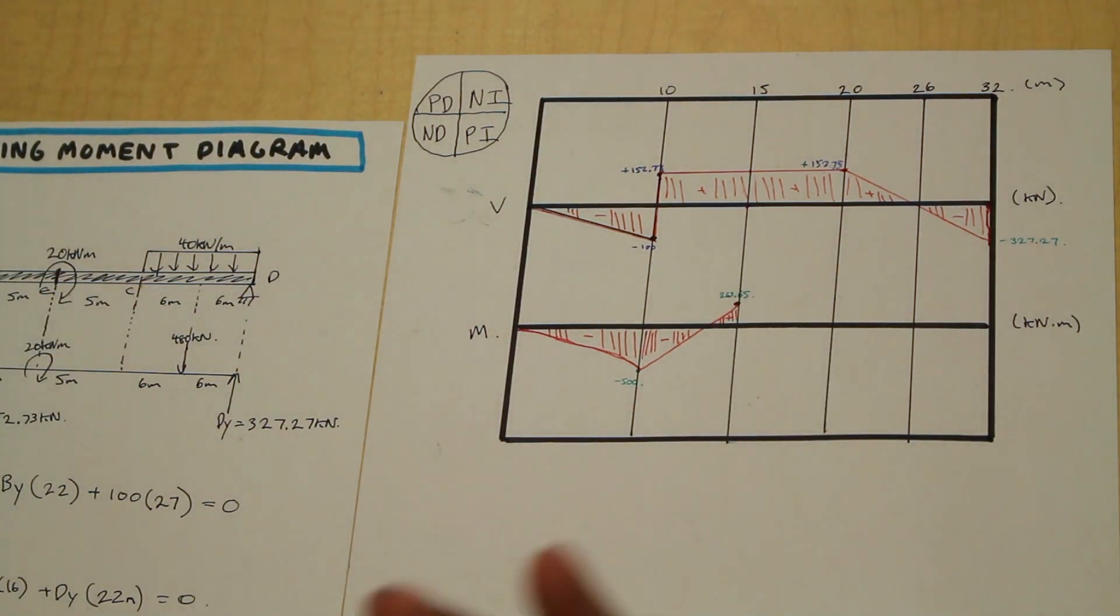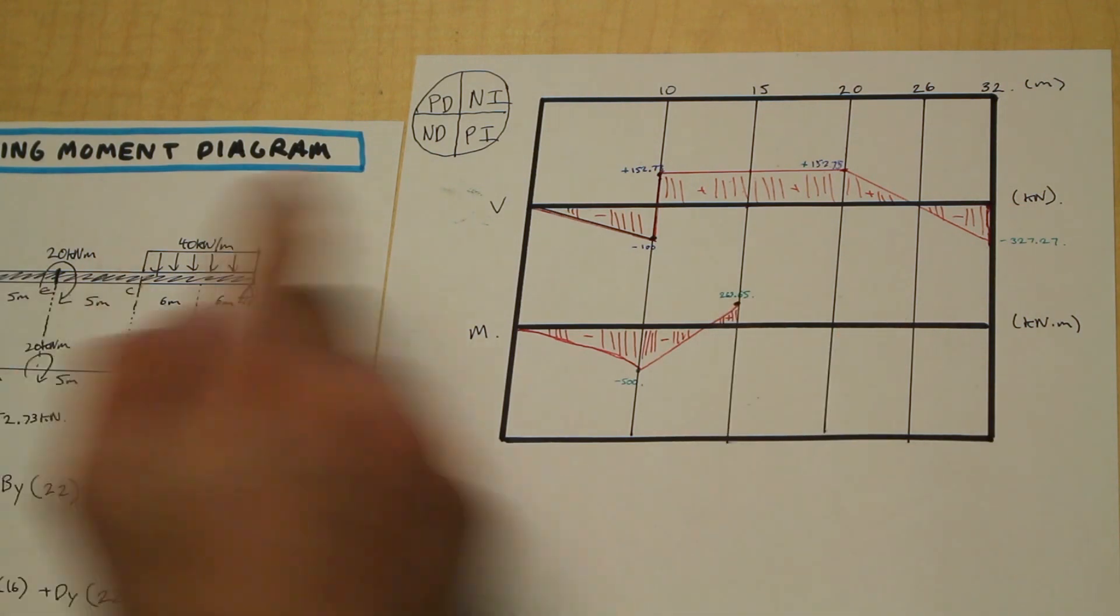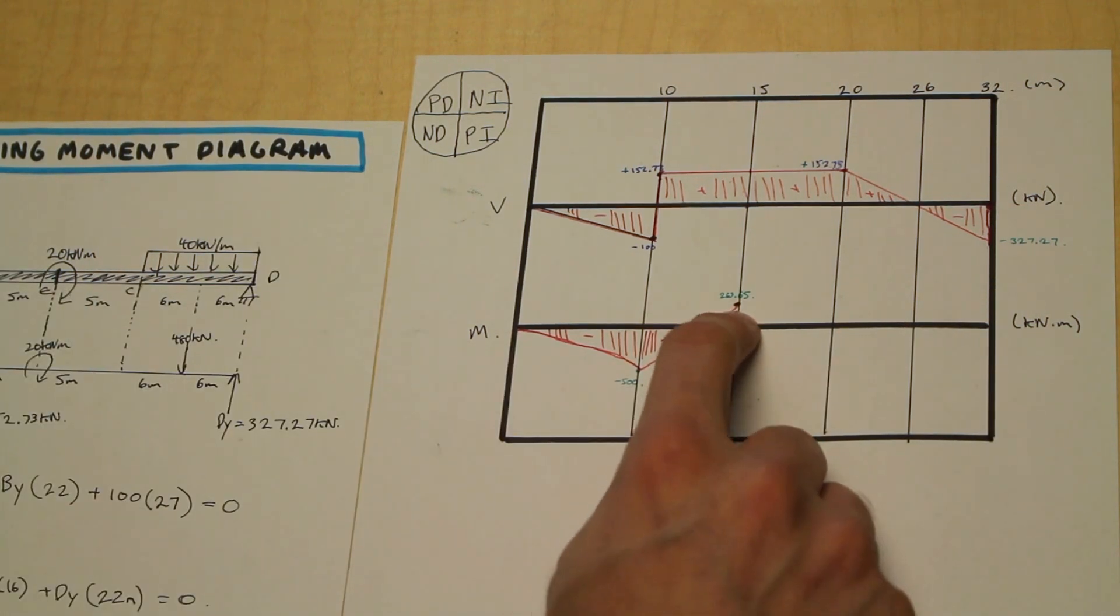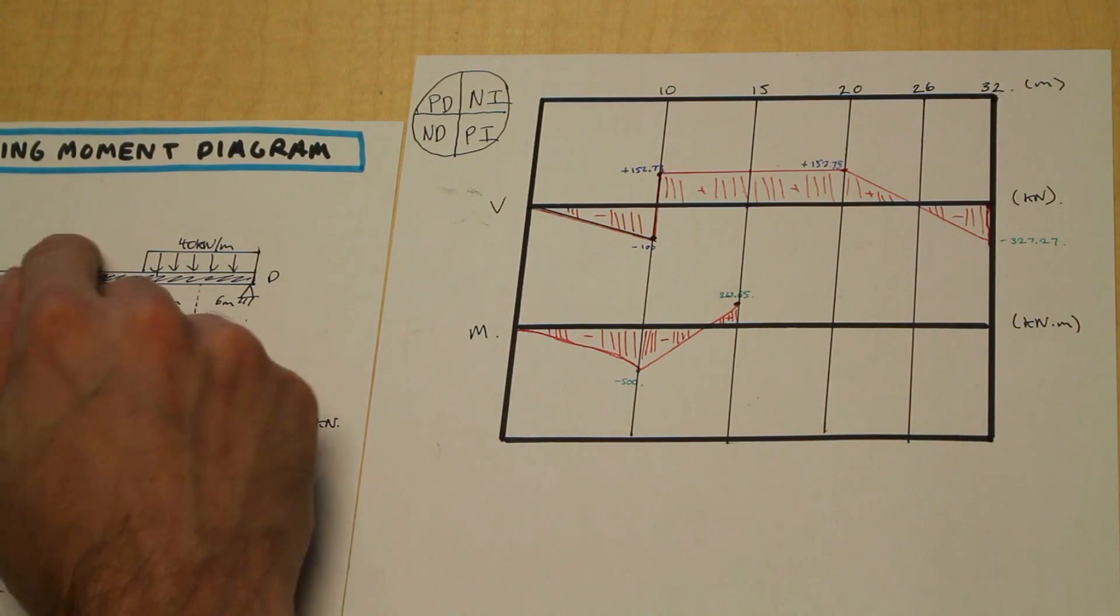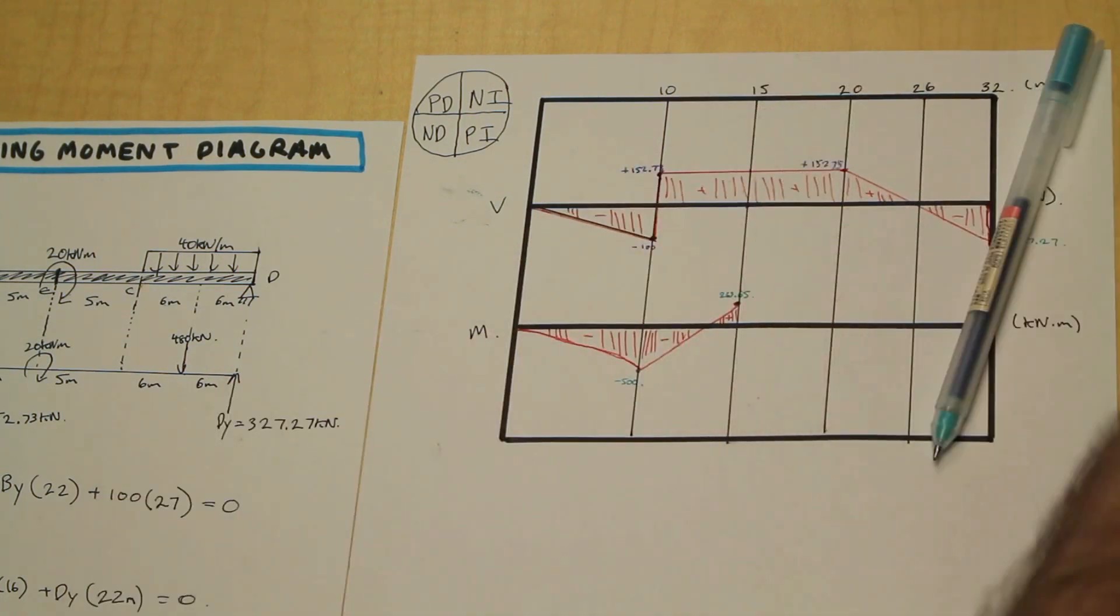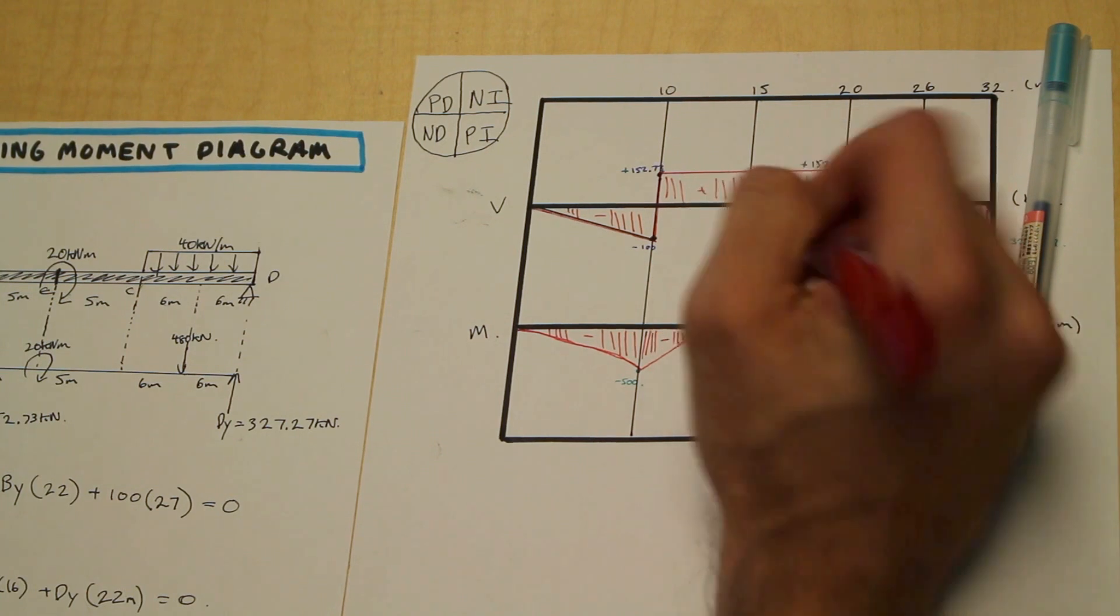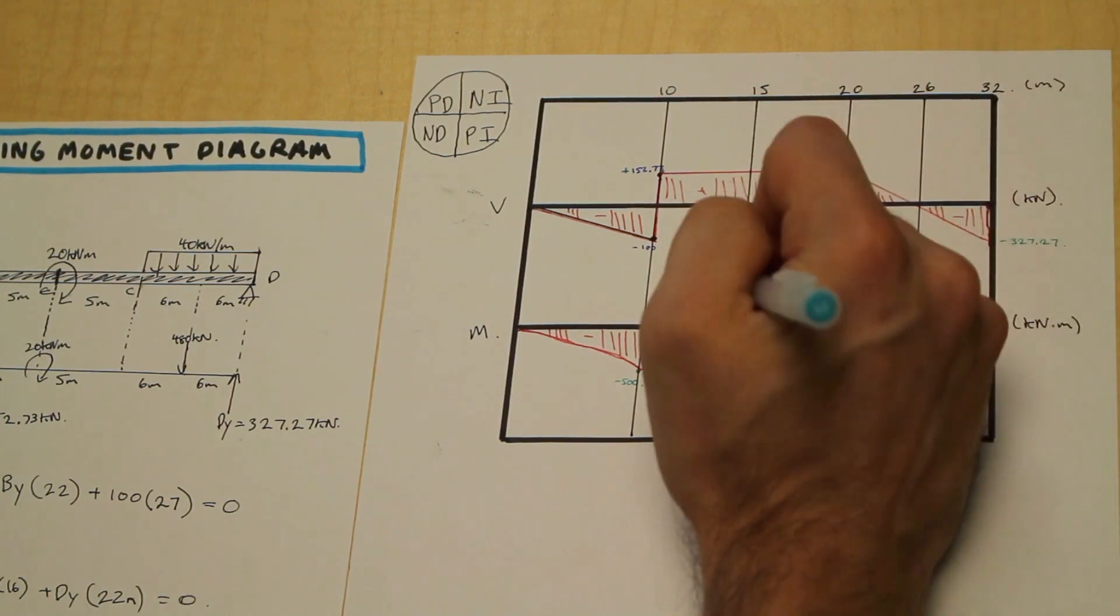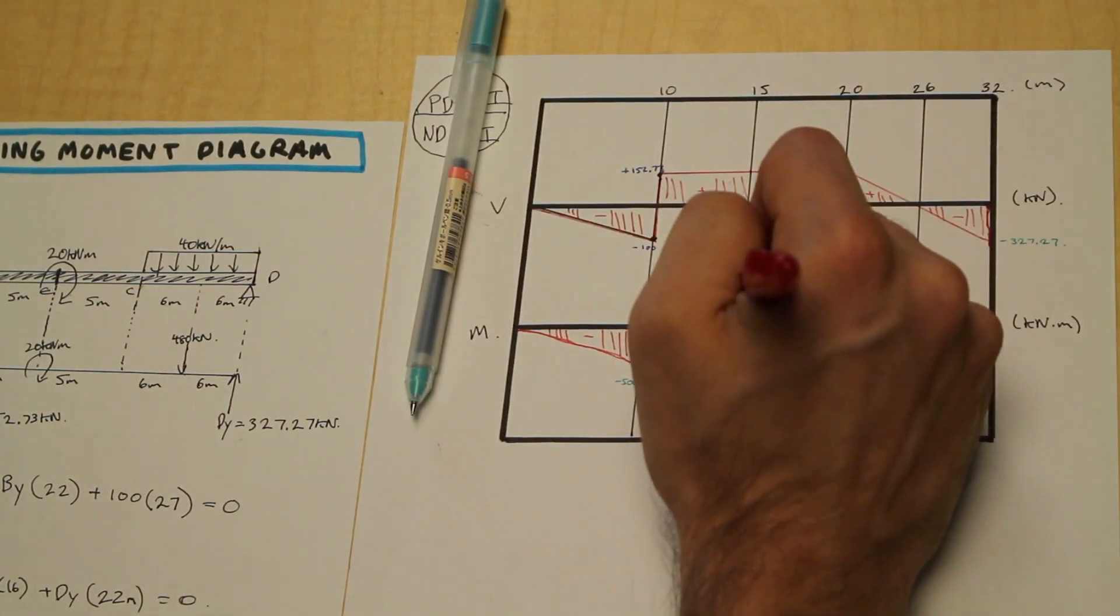For now, just know that when the moment is negative, the moment on the bending diagram is going to go up, and if it was the other way, it would go down. So we're going to add 20 to 263.65. That's going to give us 283.65. There we go.